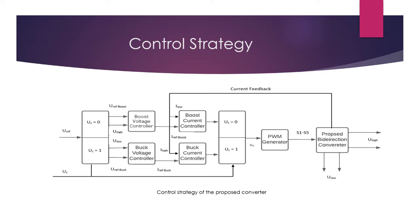The proposed bidirectional DC-to-DC converter operates in step-up or step-down mode. When UC equals 0, it operates in step-up mode and the voltage is controlled by the boost voltage controller with the reference voltage in the voltage loop. The feedback current is controlled by the boost current controller with the reference current in the current loop. The corresponding PWM schemes are selected to generate gate signals S1 to S5 in step-up mode. Similarly, when UC equals 1, the converter operates in step-down mode, with the voltage controlled by the buck voltage controller and the feedback current controlled by the buck current controller. The corresponding PWM schemes generate gate signals S1 to S5 in step-down mode.